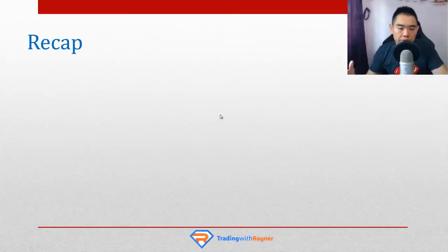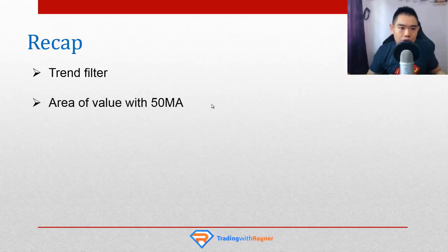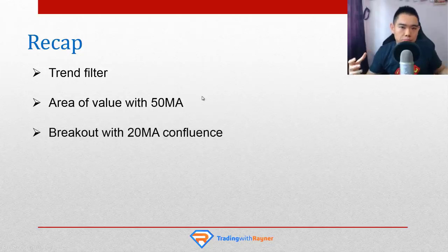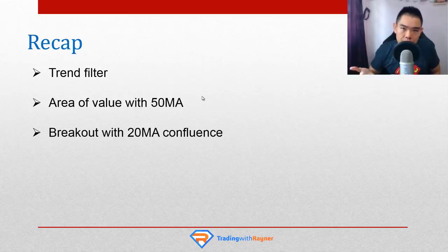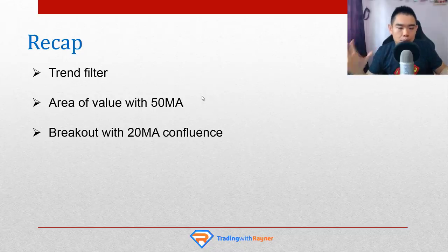So let's do a quick recap. Number one, moving average can be used to help you identify the trend — to know whether to be buying or selling at one point in time, basically as a trend filter using the 200 MA. Number two, it can help you identify area of value on your chart using the 50-period moving average — that's the 50 MA I really love to use when I trade trending markets. Number three, you can use it to identify potential breakout trades using the 20 MA as a confluence factor, watching the 20 MA support the price higher into resistance, or after a breakout to support the next wave higher.